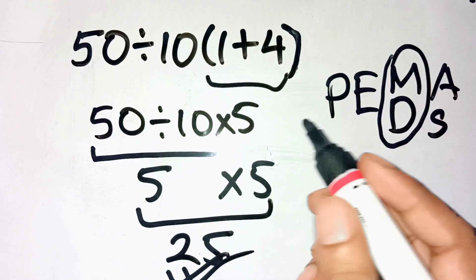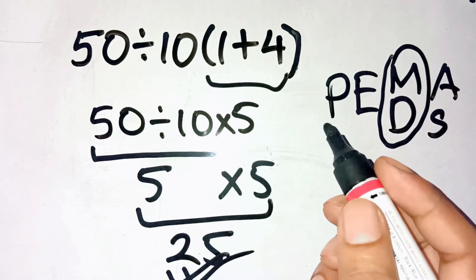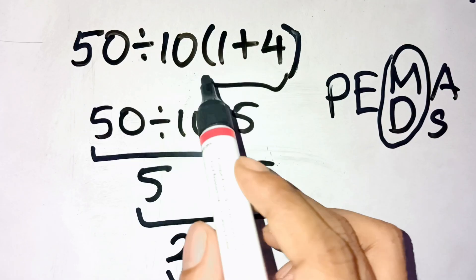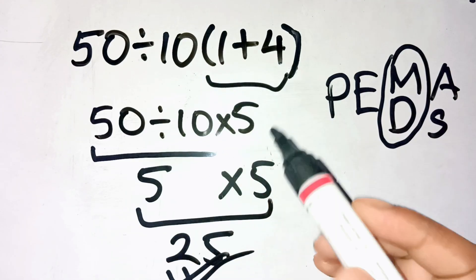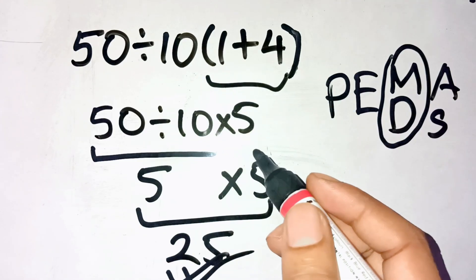If you don't believe it, try typing it into your calculator exactly like that. 50 divided by 10, open parenthesis, 1 plus 4, close parenthesis. And watch the result.